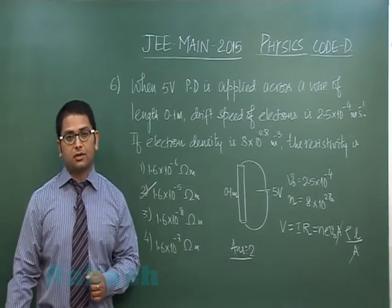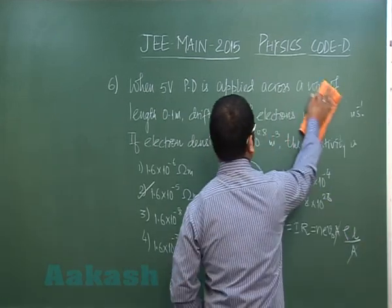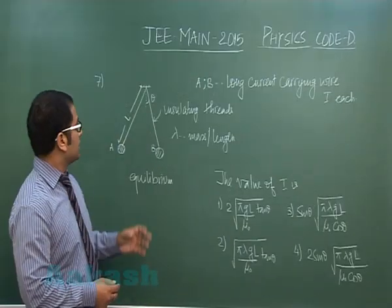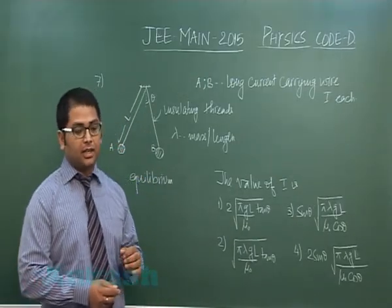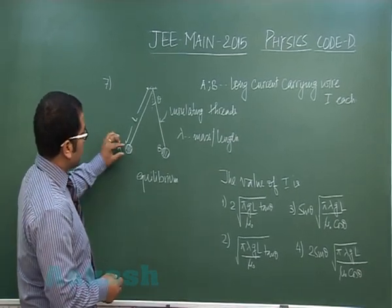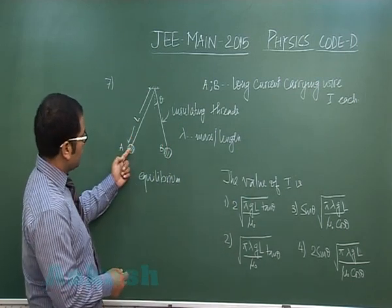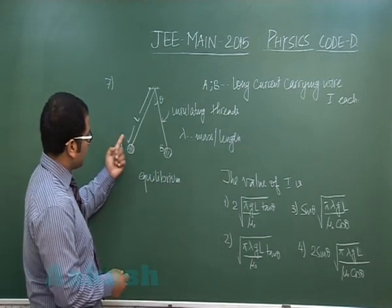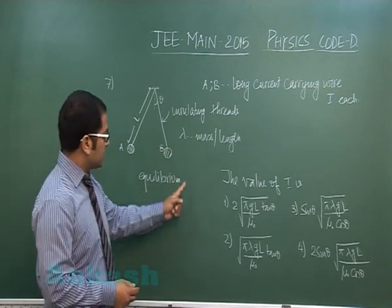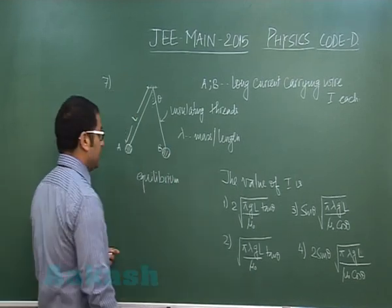Now let's move to question number seven. Question number seven is from magnetism where force due to magnetism has been taken into account. These are two long current carrying wires I each and the situation is in equilibrium and both the wires carry current I each.